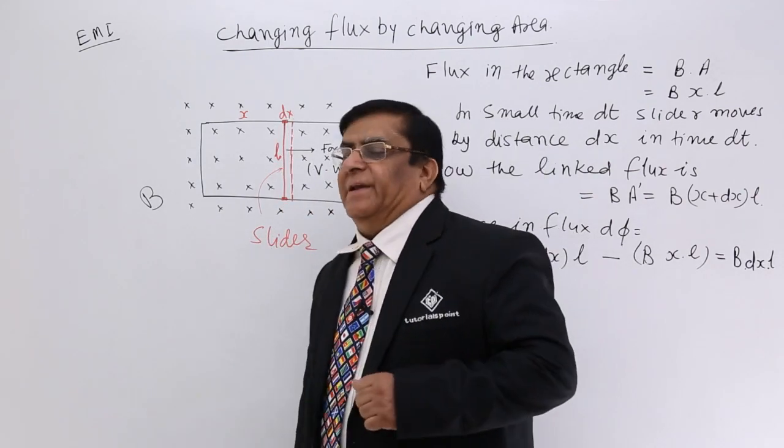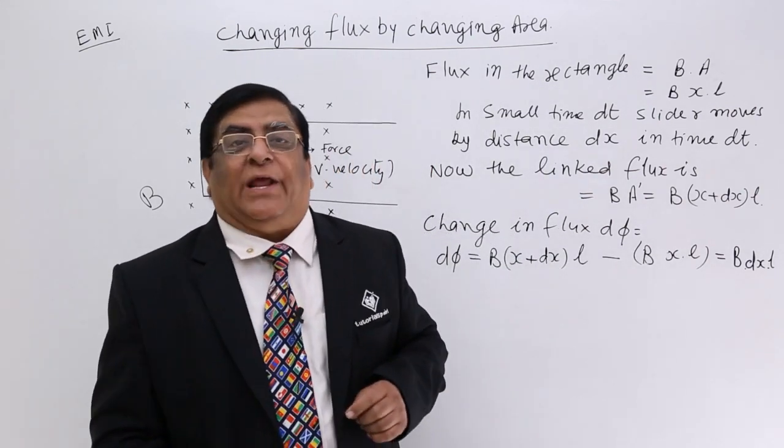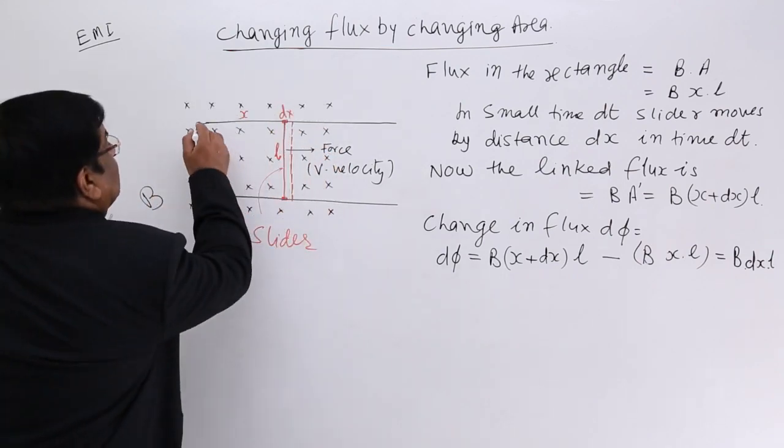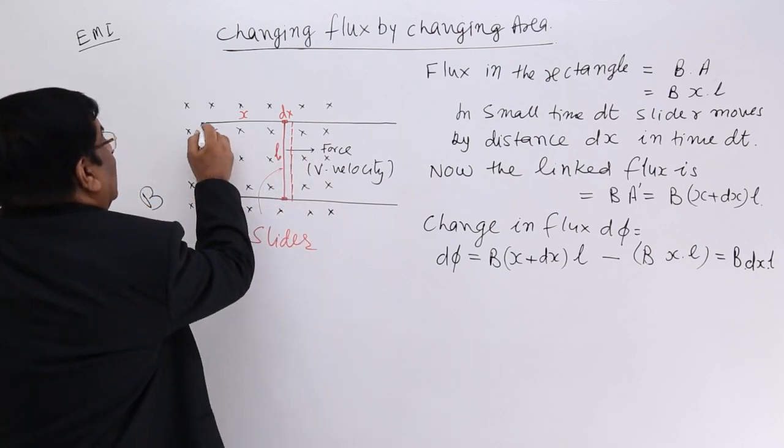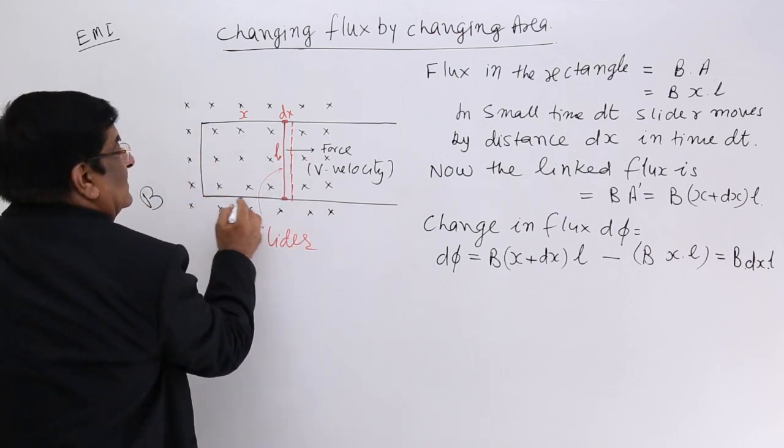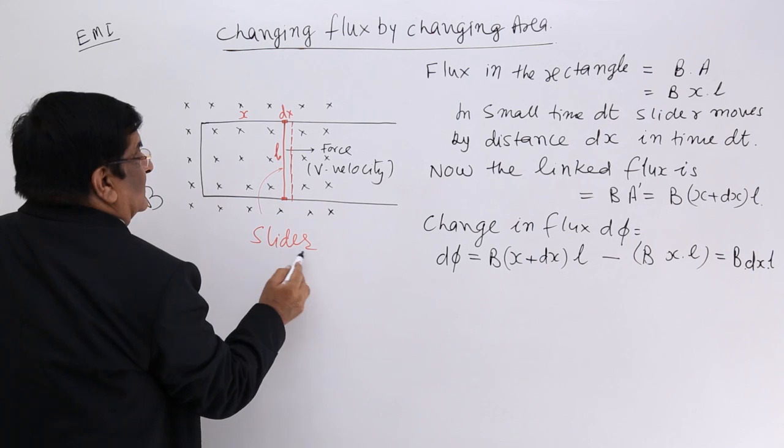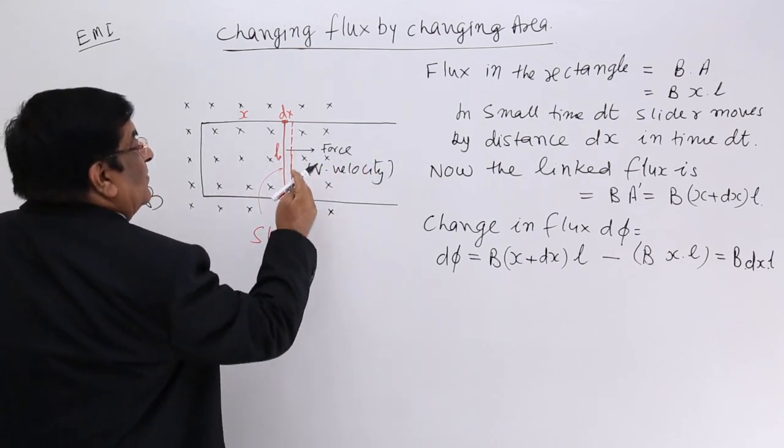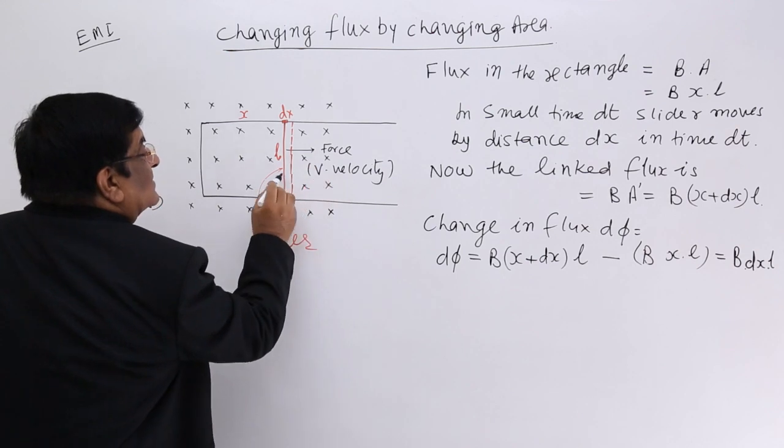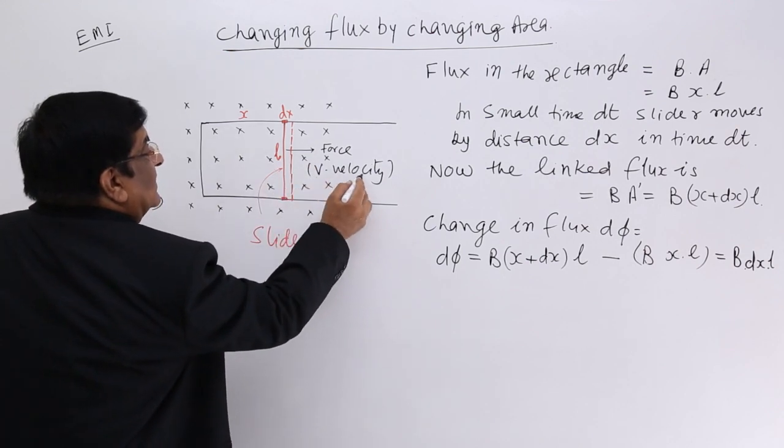Here we have made an arrangement, there are two rails. These are two rails, on these rails this is a slider. The rails are connected on this side and here we have put a slider. This slider can move like this, we apply certain force and start moving it with a velocity V.